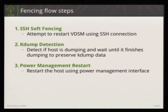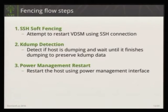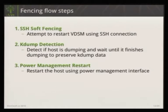In oVirt, the whole fencing flow contains three important steps. The first is SSH soft fencing — the easiest thing to do is to connect to the machine and try to restart VDSM, which is our agent that handles all calls between the engine and hypervisor. If that's not possible, or if restarting succeeds but still doesn't work, we continue to the next step: kdump detection.